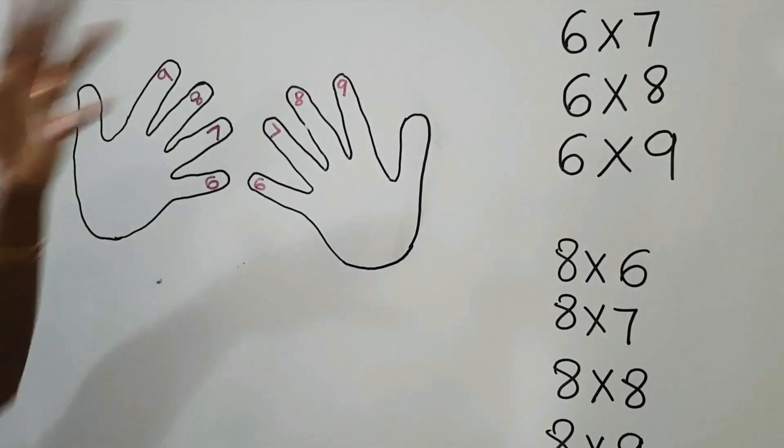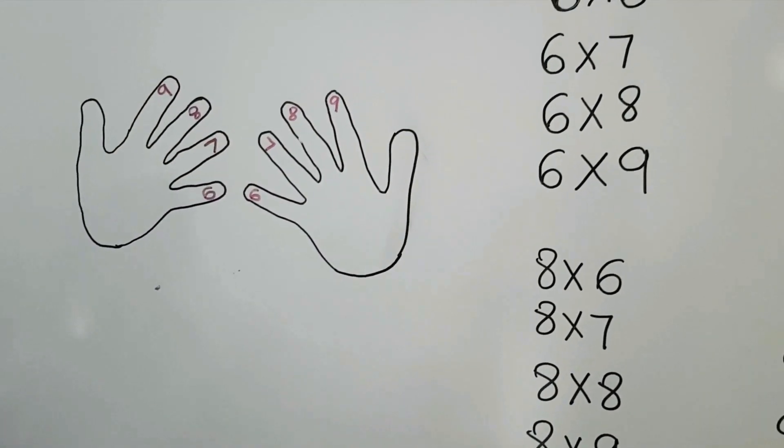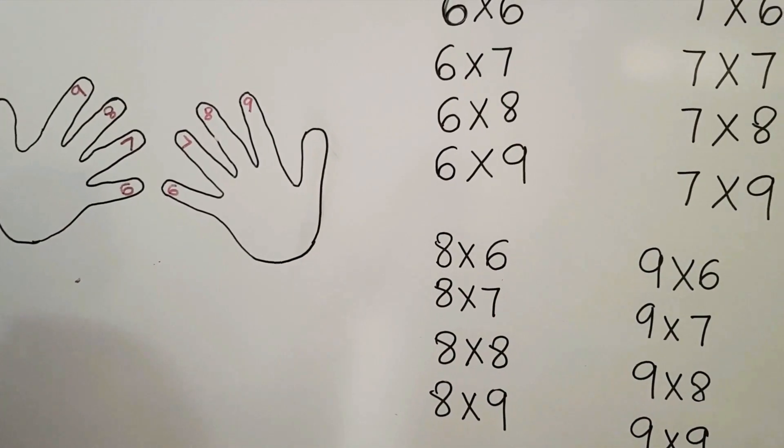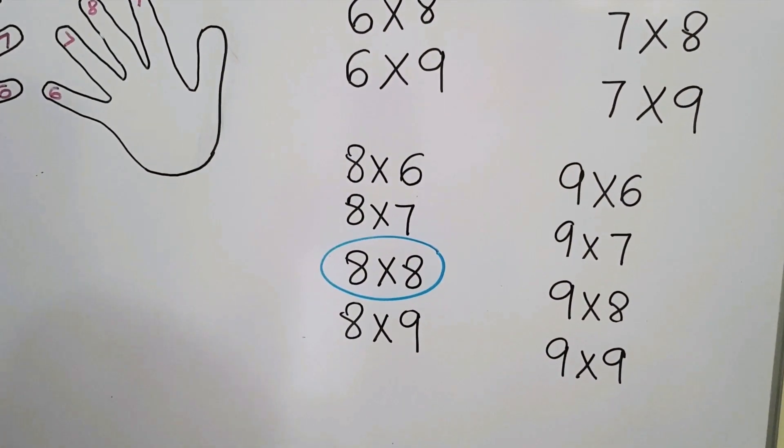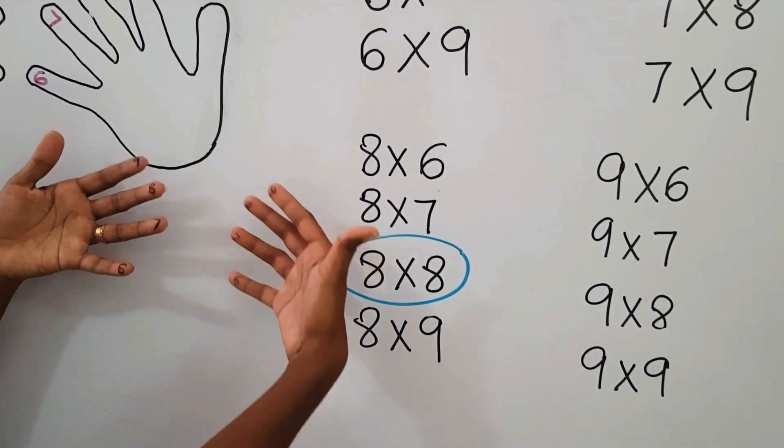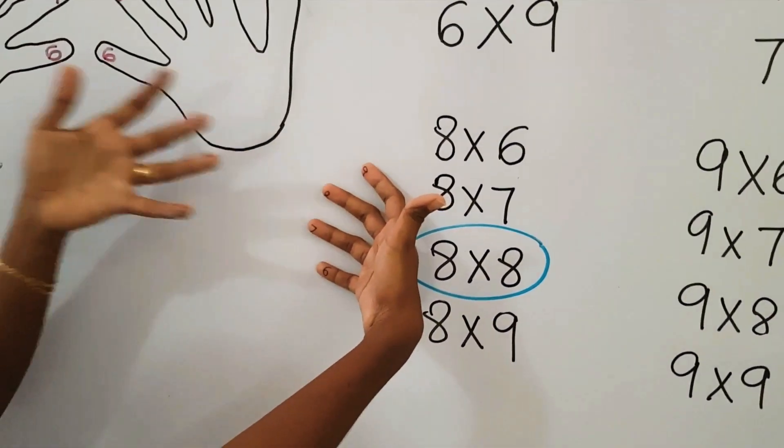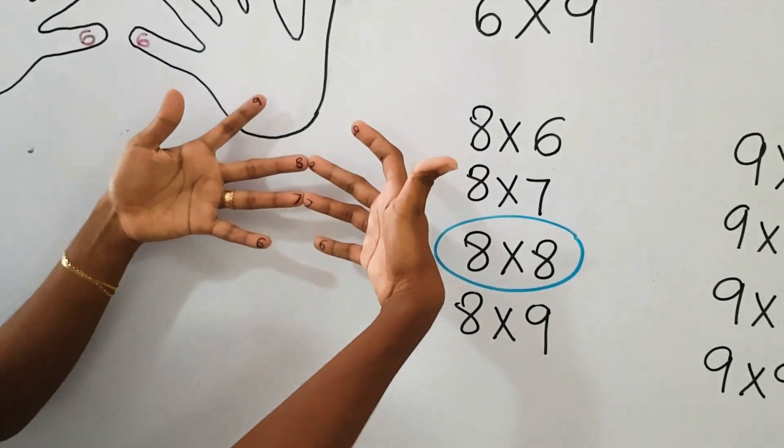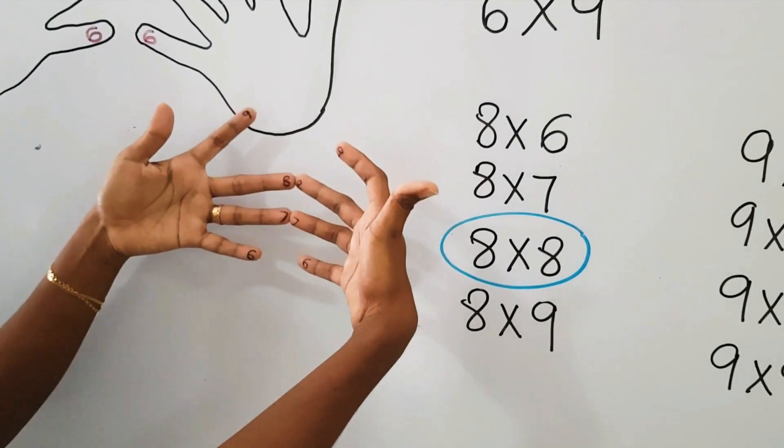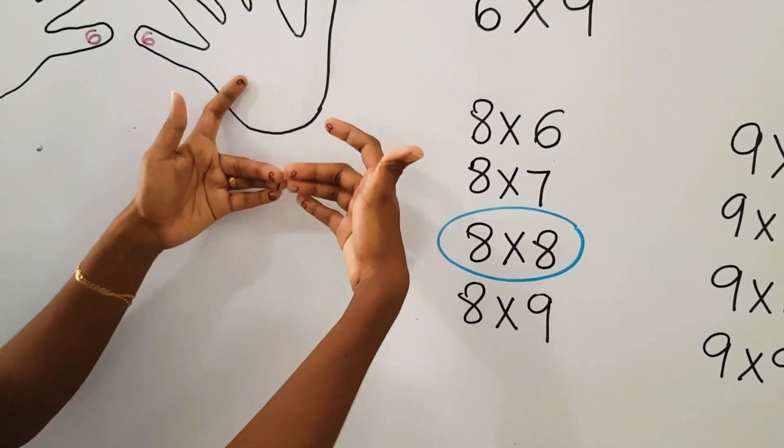Let's do one example: 8×8. When we are getting the answer for 8×8 using our fingers, you can see 8 from this hand and 8 from the other. We join those two and fold all the fingers below that.